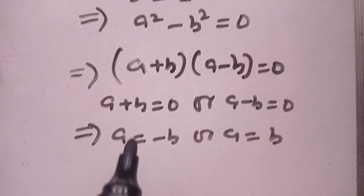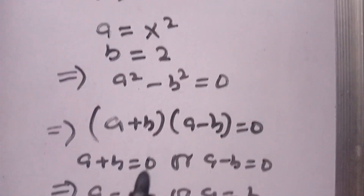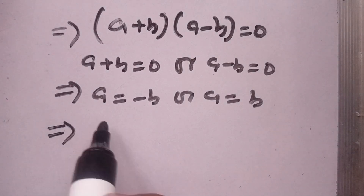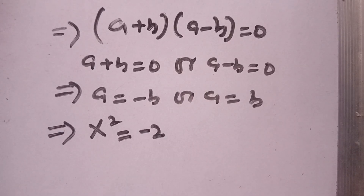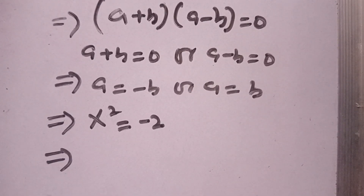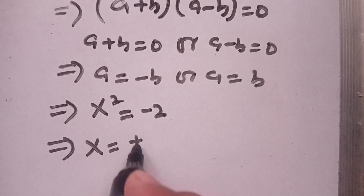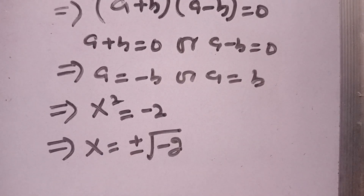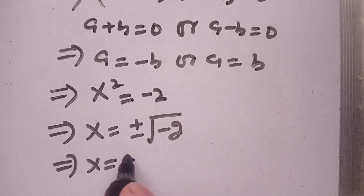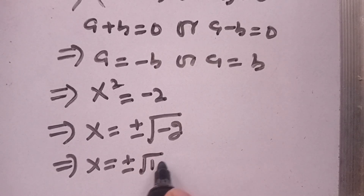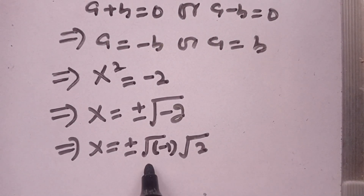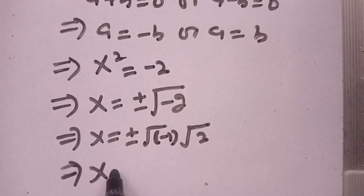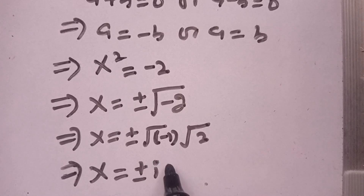Substituting back, a equals x squared and b equals 2. In the first case, x squared equals minus 2, giving x equals plus or minus square root of minus 2, which implies x equals plus or minus square root of minus 1 times square root of 2. Since square root of minus 1 is iota, our value of x equals plus or minus iota root 2.